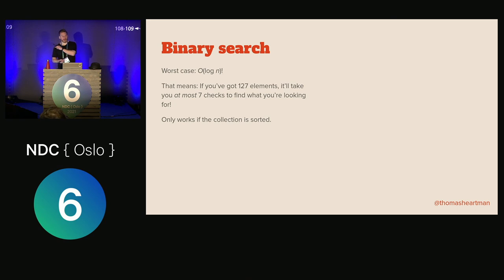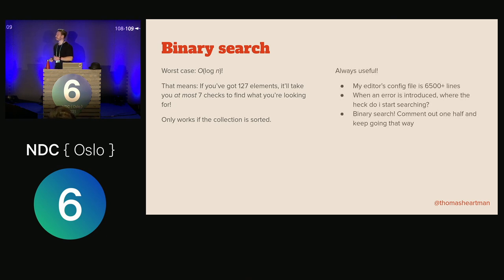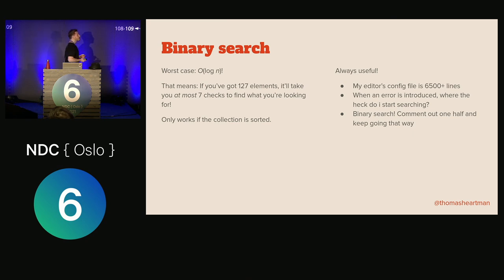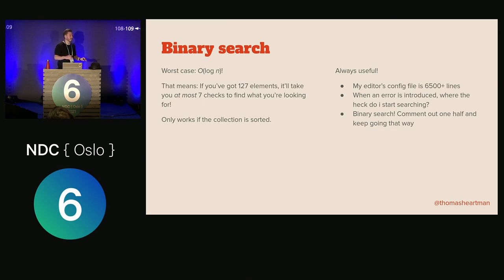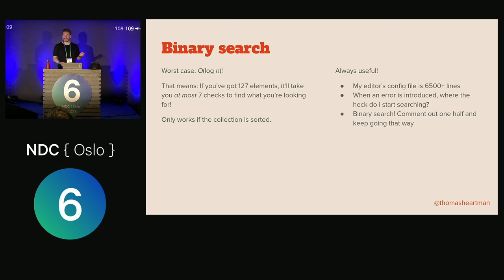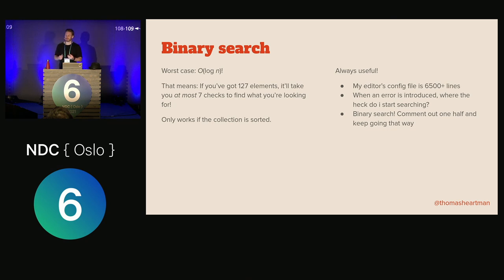It only works if the collection is sorted. Beyond Git, I find binary search useful in day-to-day stuff too — my editor's config file is 6,500 lines long, written in Lisp. If there's an extra closing parenthesis somewhere and the editor just breaks, how do you find it? Binary search works really well: comment out or delete half the file, see if it works. If it does, the error was in the bit you deleted. If not, it's in the first half. Keep halving and you find the result really quickly.